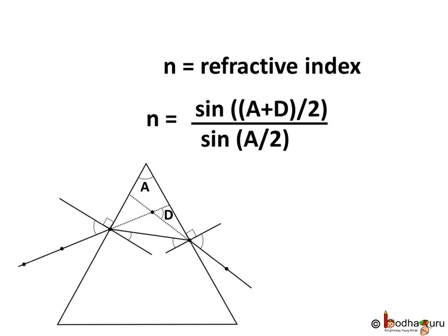Here, the prism is made of glass. So, we can easily find the refractive index of the glass if we know the angle of deviation and the angle of prism. We shall learn more about the prism in the next lesson. Bye-bye.